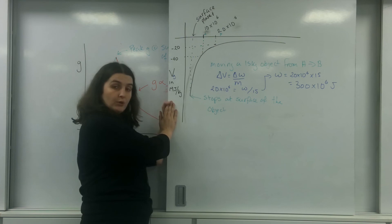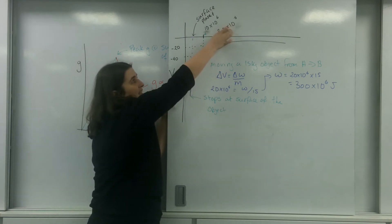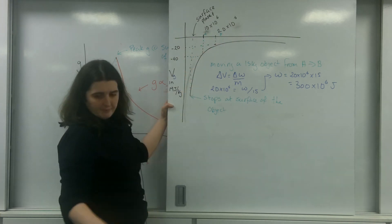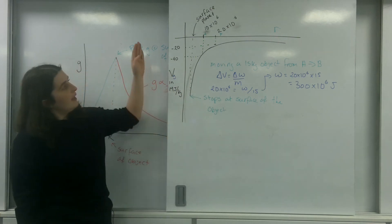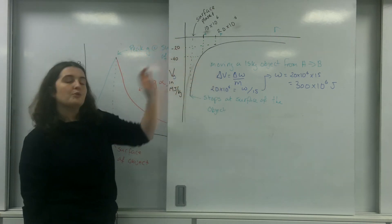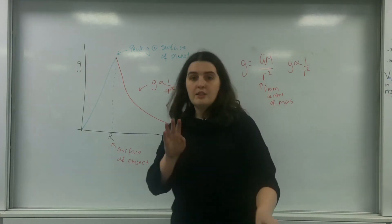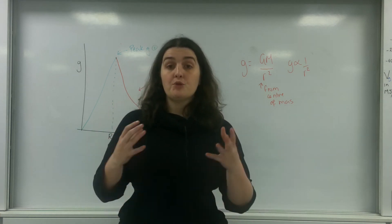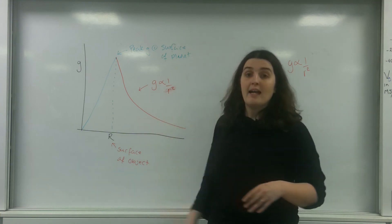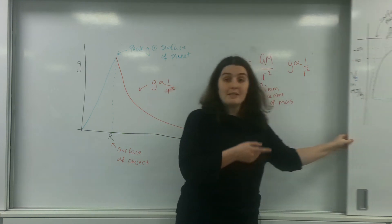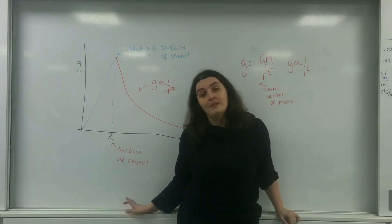So if you're moving something from one position to another, you can read the graph, get the potential at each point, work out the change in potential, and work out how much energy you need. This graph is important because you may be asked to read it — please make sure you read the axes carefully. Then use the formula to work out the energy change. That is gravitational graphs, the importance of the area under the g versus R graph, and how it relates to the potential graph. Thank you.